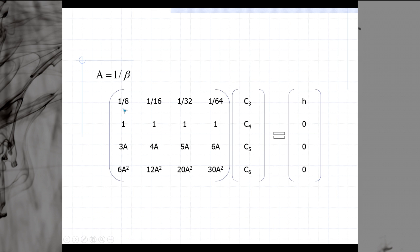Here's our matrix where we have placed in our equations as follows. Here's our 1/8th, 1/16th, 1/32nd, 1/64, or 1 1 1 1, 3a, 4a, 5a, 6a, where a is equal to 1 over beta. 6a squared, 12a squared, 20a squared, and 30a squared. This is just putting our four equations in matrix form, where each row is multiplied by this column of c's, equaling h for s. That was in the middle of our table, the second row, and then the last row is 0 0 0.